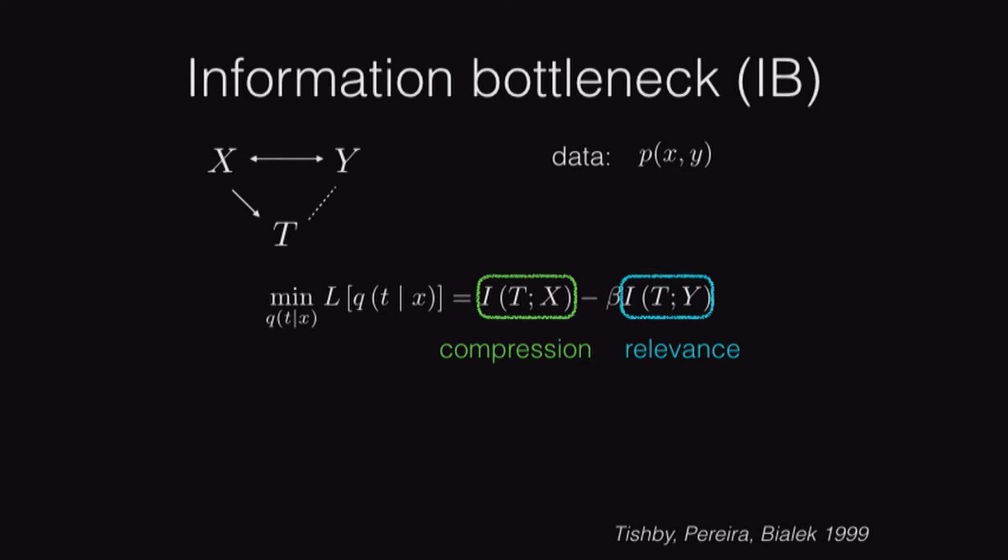We have this trade-off parameter beta. This measures the relative preference for compression and relevance. Small beta encourages maximum compression, throw everything away. Large beta encourages maximum relevance, so don't worry about compression, just keep everything. Keep all the information about Y. There's also a Markov constraint, which basically enforces that after training on the joint distribution of X and Y, in our test set, we're receiving examples of X, and we need to be able to predict information about Y without looking, without knowing Y. We're only looking at T.